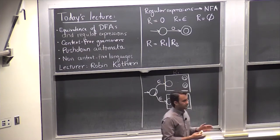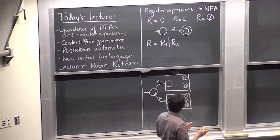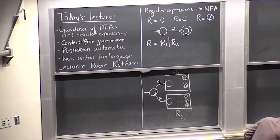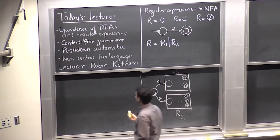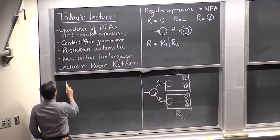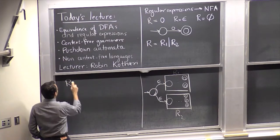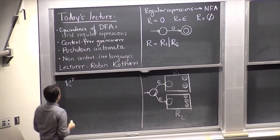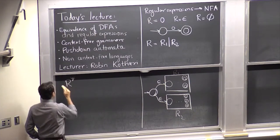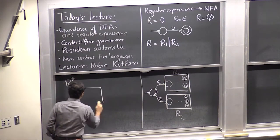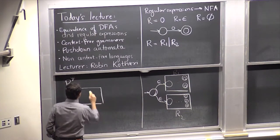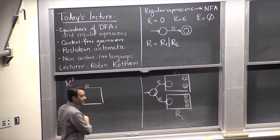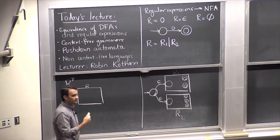So this whole thing is an NFA for the regular expression R, which is the union of these two things. This shows that if you have two regular expressions which you know how to construct NFAs for, you can construct one for the union. There are two more operations you can do with regular expressions. You can do the star operation. So now we have an NFA for R and we want to construct an NFA for R star.